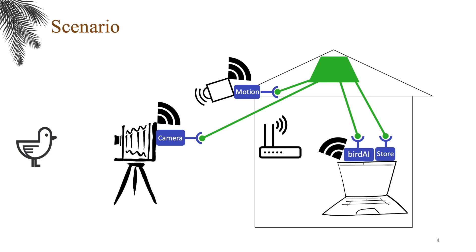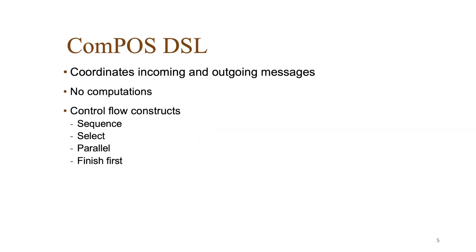The logic for composing the system is put in the composition. The COMPOS DSL sets up connections to services and then coordinates incoming and outgoing messages. COMPOS has no support for computations. Instead, computations are delegated to the services.